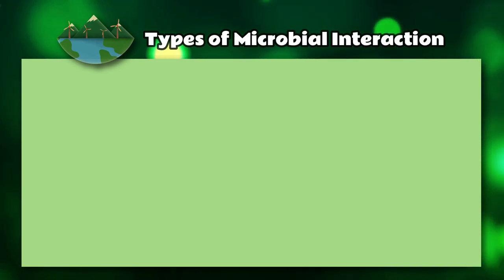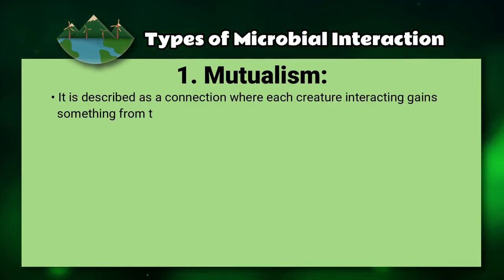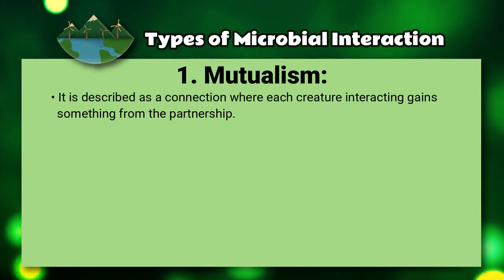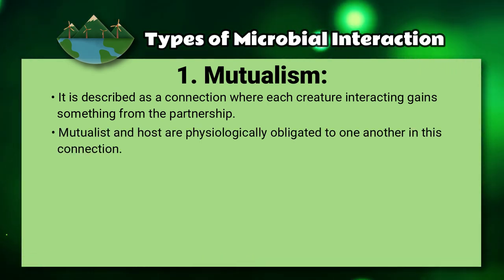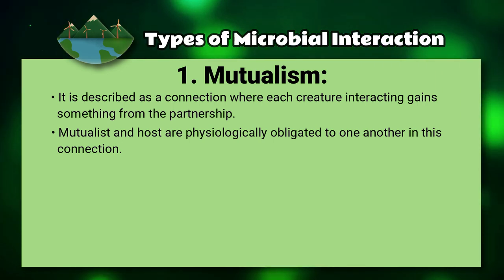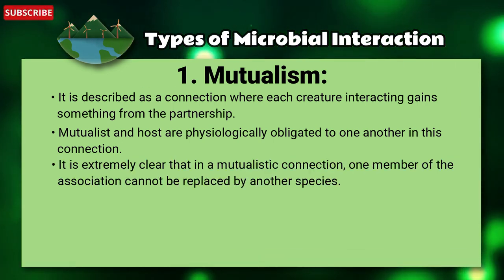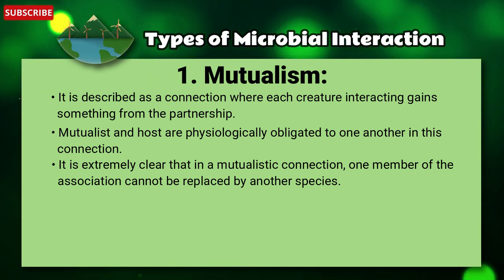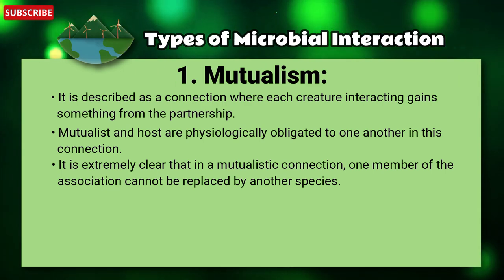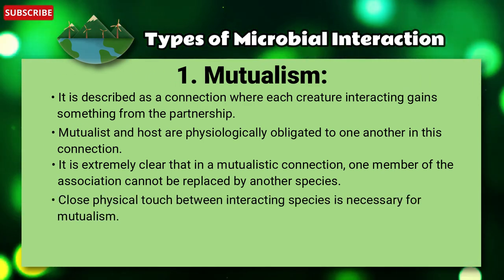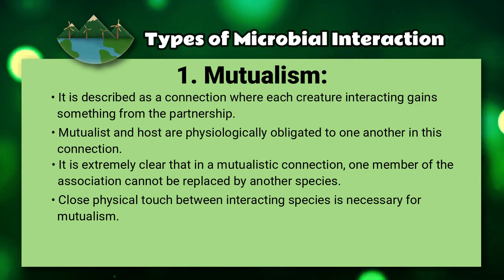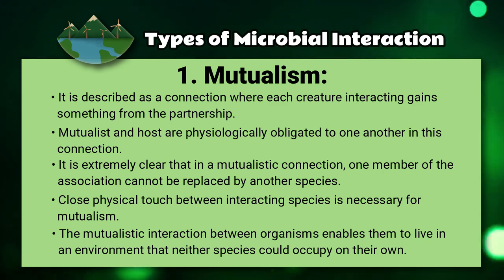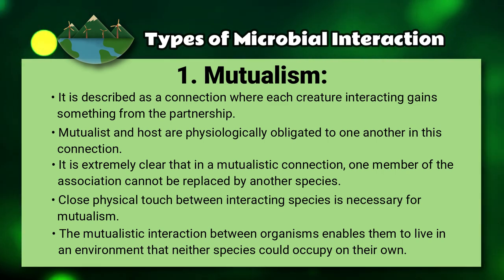First, let's learn about mutualism. It is described as a connection where each creature interacting gains something from their partnership. Mutualist and host are physiologically obligated to one another. In a mutualistic condition, one member of the association cannot be replaced by another species. Close physical touch between the interacting species is necessary for mutualism. The mutualistic interaction between organisms enables them to live in an environment that neither species could occupy on their own.